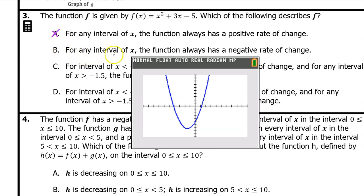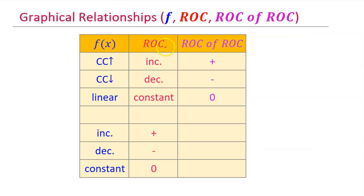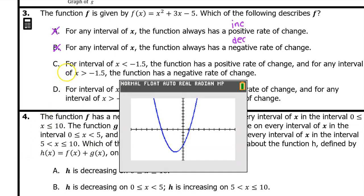A is not the answer. Option B says for any interval of x the function always has a negative rate of change — that is also false because we see positive rates of change on the right side of the graph. This function is both decreasing and increasing, so B is out. In my mind I'm always picturing the chart showing the relationships: a positive rate of change means the function is increasing, a negative rate of change means it is decreasing. Option C says for any interval where x is less than negative 1.5 the function has a positive rate of change, and where x is greater than negative 1.5 it has a negative rate of change.